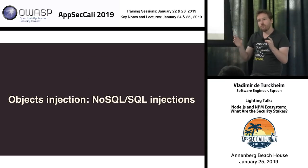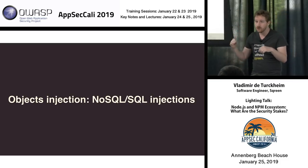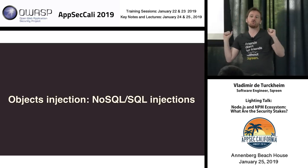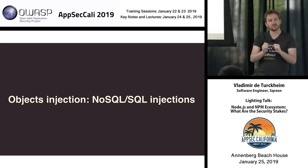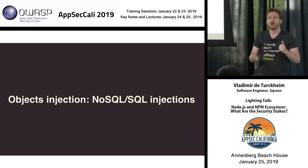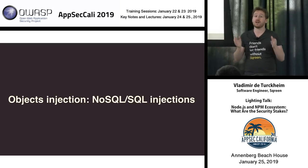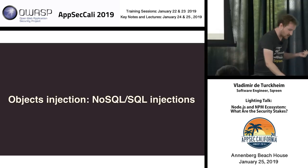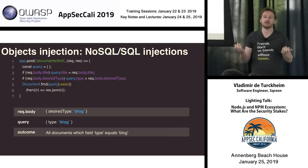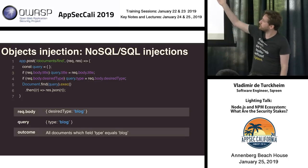Let's go through more Node.js-specific attacks: type tampering or object injection. The idea is to push data into a web server with a type that is not expected. Because JavaScript is not a typed language, and web frameworks in Node.js don't have type checking by default, where a web app would be expecting a string, you could put an object. Let's go through this other controller.